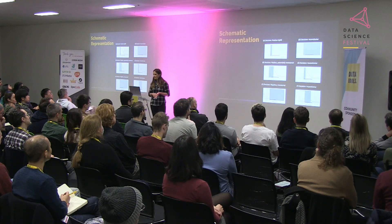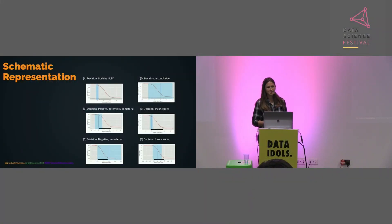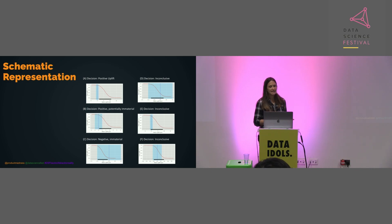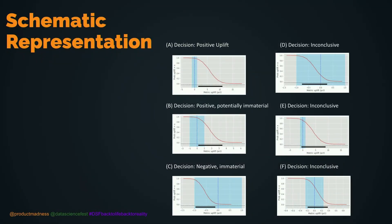A few examples of different results and how we would interpret them. In example A, there is a positive uplift: the 90% HDI is above zero, doesn't cross zero, and is not within the ROPE — so we conclude the treatment shows a positive uplift compared to control. In example B, we again see positive uplift and the HDI is above zero, but it does cross within the ROPE, so it is positive but potentially immaterial. In example C, we see a negative effect — the HDI doesn't cross zero, but the entire HDI is within the ROPE — so it is a negative but immaterial result.